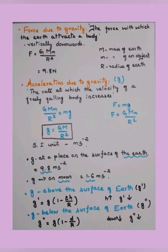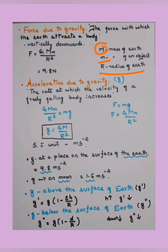Next is the concept of force due to gravity. The force with which the earth attracts a body towards itself is called the force due to gravity. This force is given by F = G·M·m / r², where M is the mass of the earth, m is the mass of the object, r is the radius of the earth, and G is the gravitational constant. This force is calculated as F = 9.8 Newton.